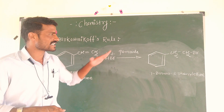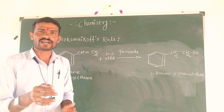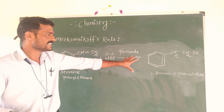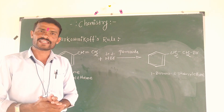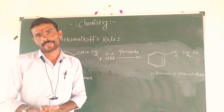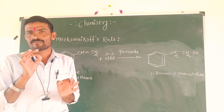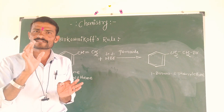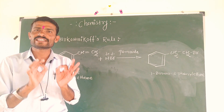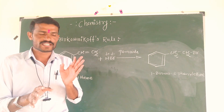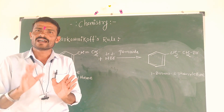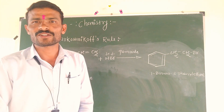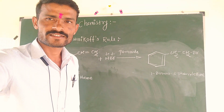In the presence of peroxide, HBr follows the Anti-Markovnikov's Rule. HCl always follows the Markovnikov's Rule. So to summarize: HBr with peroxide follows Anti-Markovnikov's Rule, while HCl always follows Markovnikov's Rule.